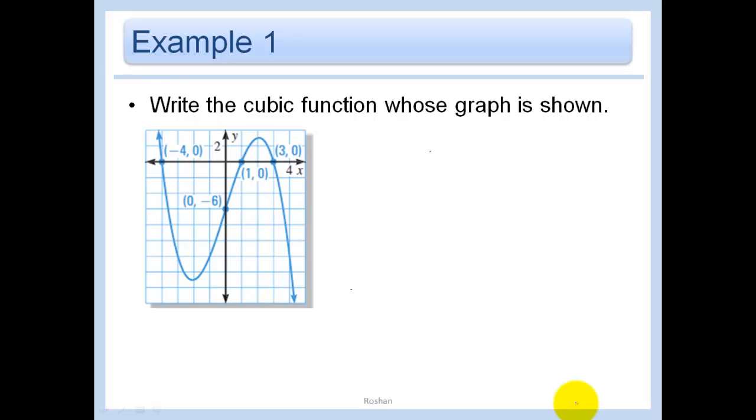Let's write the cubic function whose graph is shown. Basically, you just want to take the information you have and try to do something with it. So this looks like—let's see, this has one, two turning points, so it looks like it's going to be cubic. Anyway, they tell us it's going to be cubic. Alright, and we have three zeros, so I'm going to do something with all of those zeros.